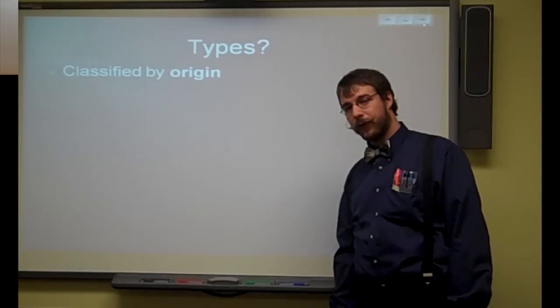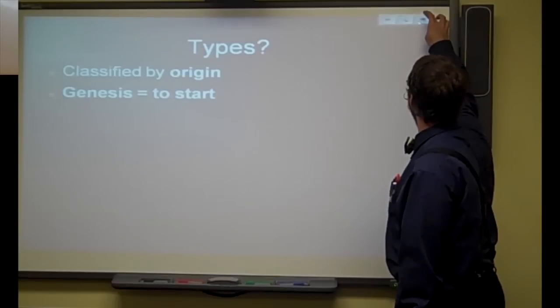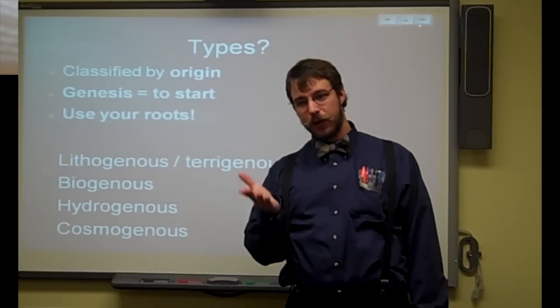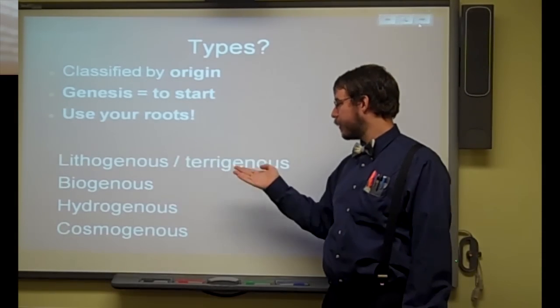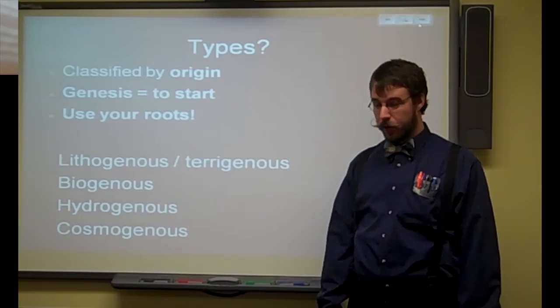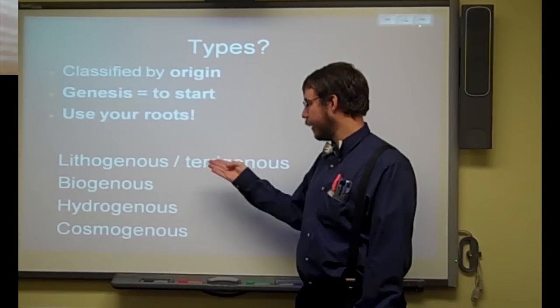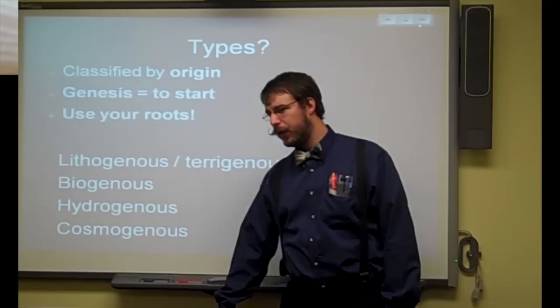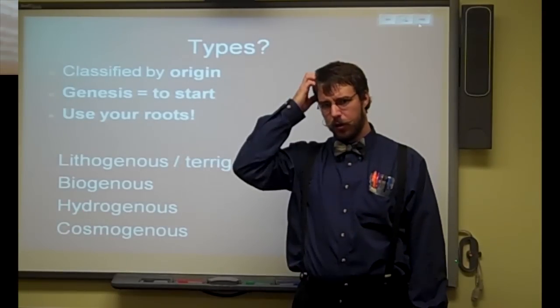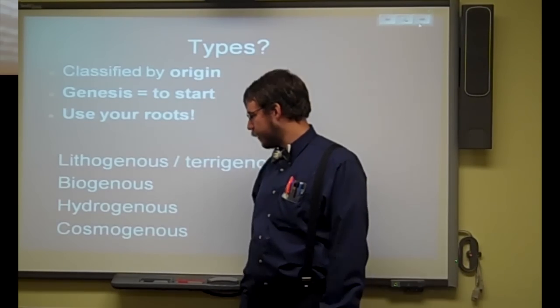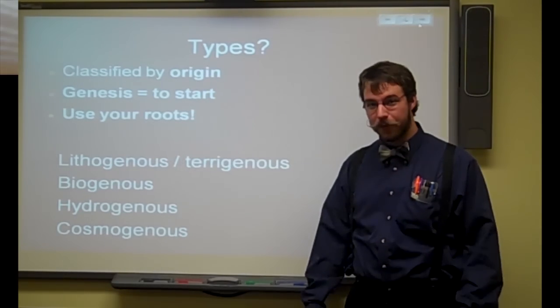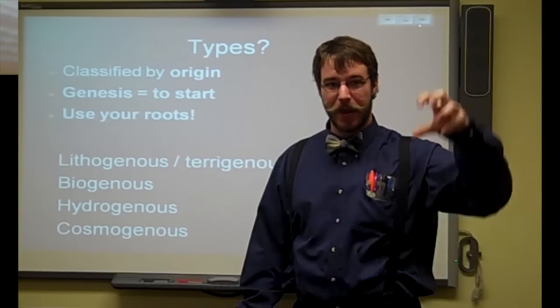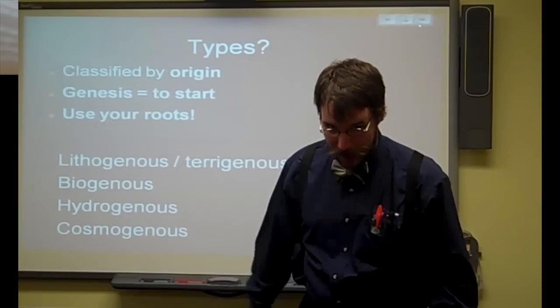So the types of sediment, they're classified by the origin that they come from. They all have the word genesis, which means a start, so then you just throw in your root words. There's lithogenesis or terrigenesis, that started at rock, started at land. Biogenesis started as a living thing. Hydrogenesis started in the water - okay that one's weird, we'll get to that later - and then cosmogenesis. Cosmo, I'm not talking about Cosmo Kramer, I'm talking about from outer space, man, like meteors and stuff and alien deposits, literally.